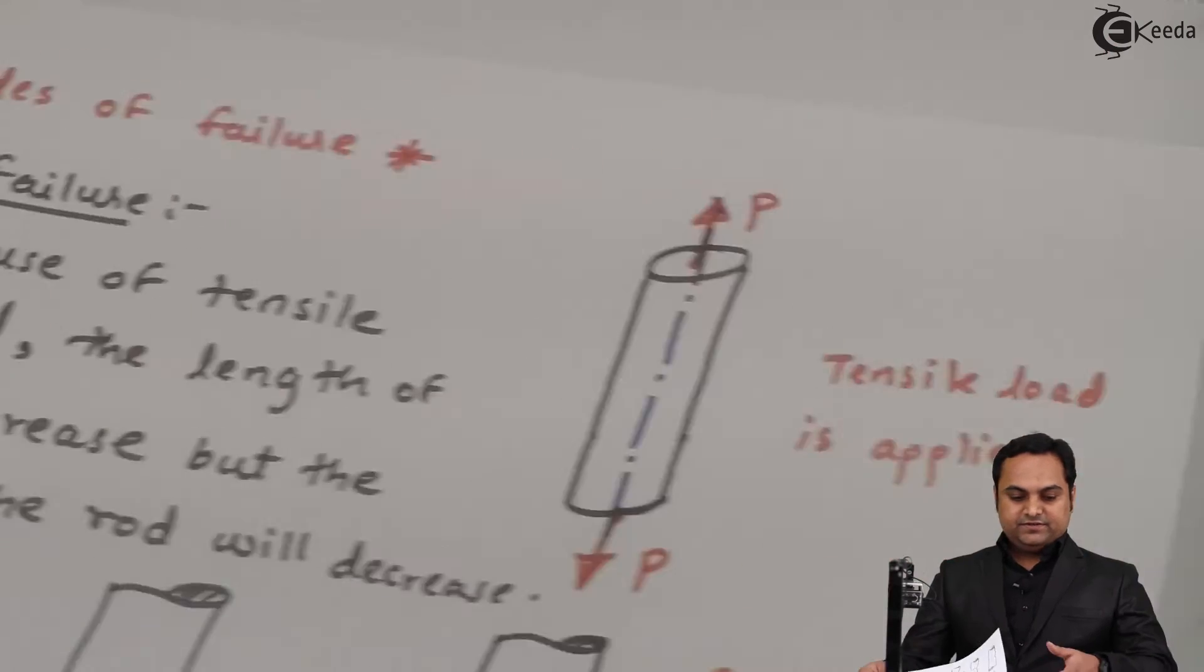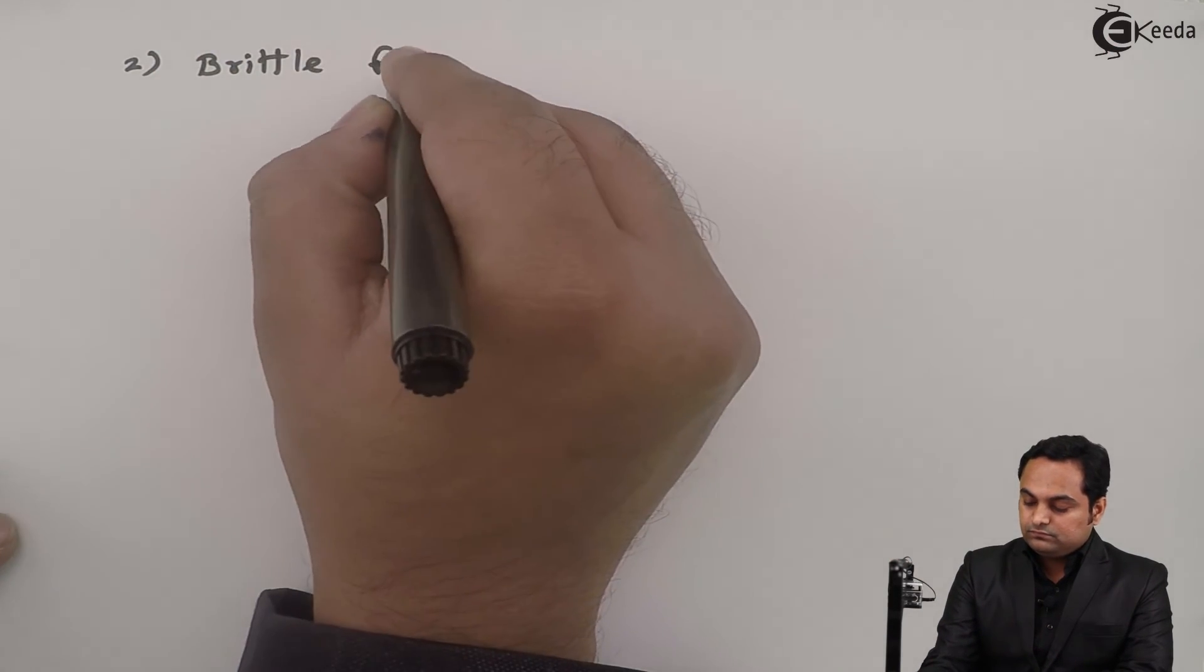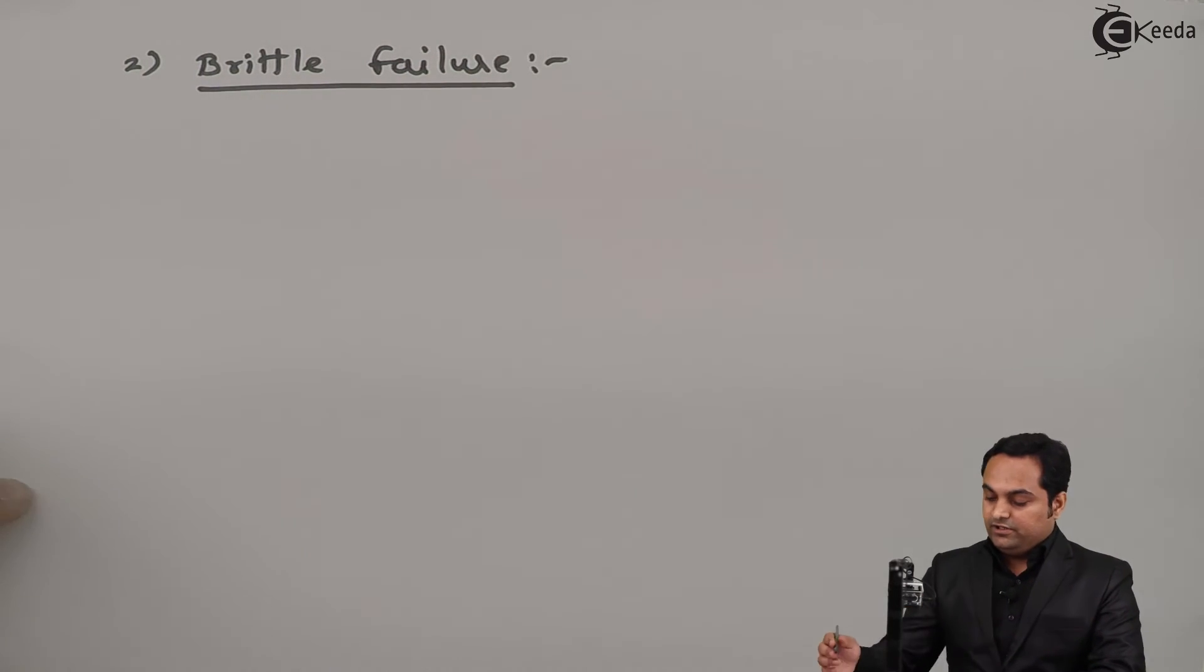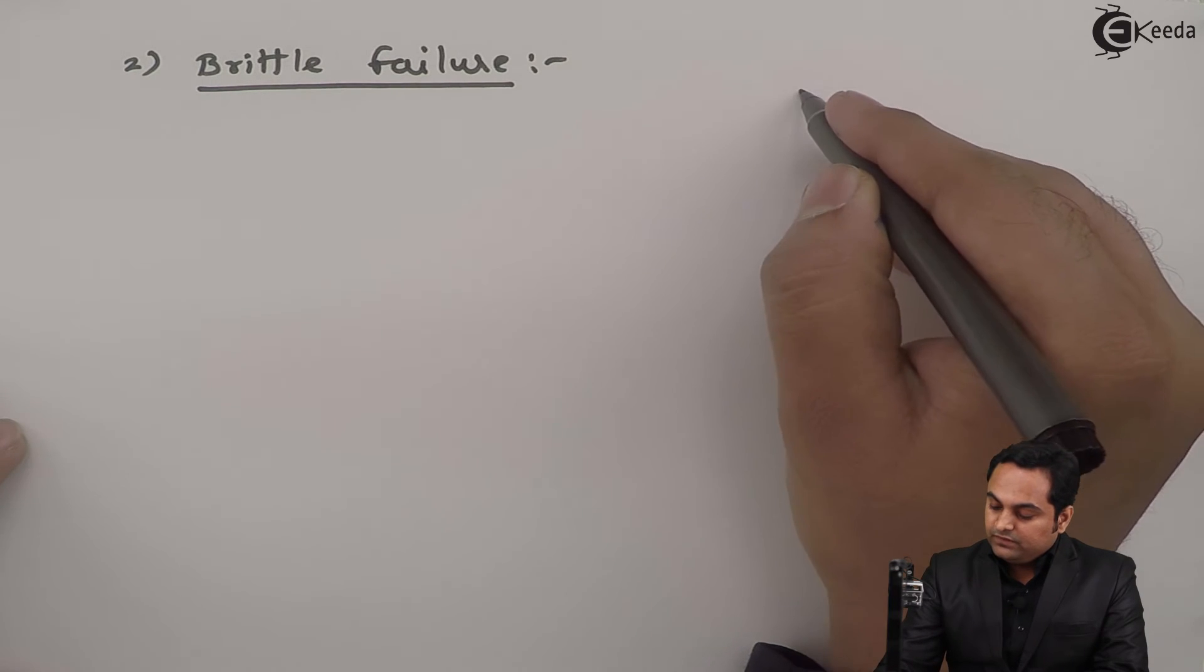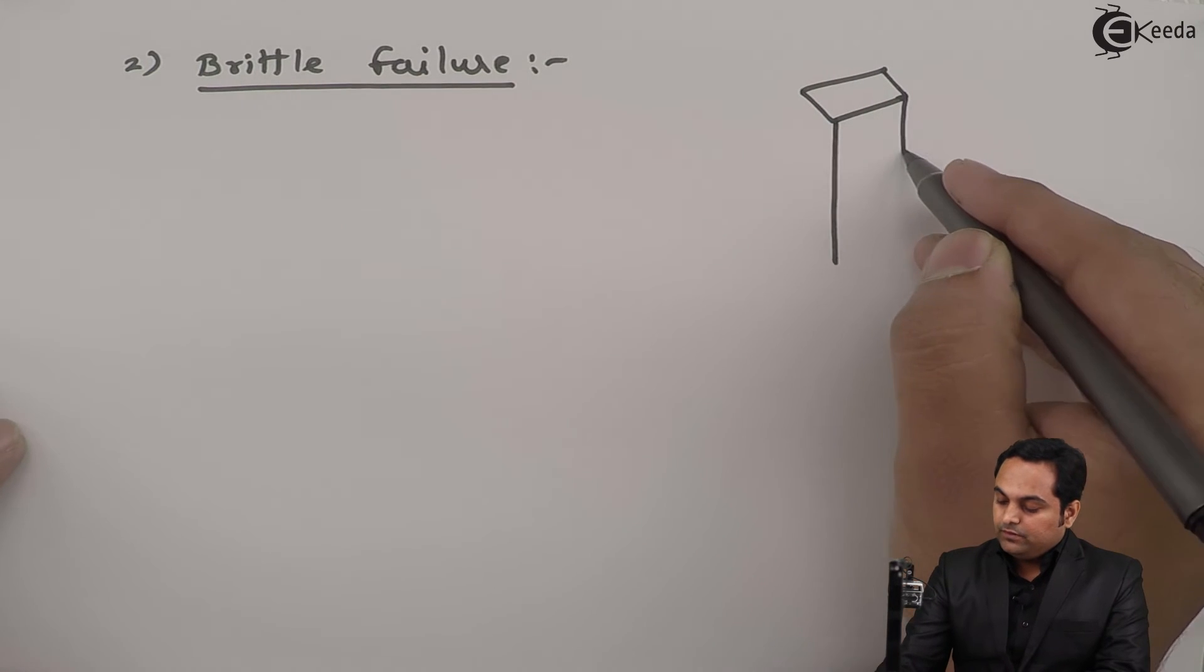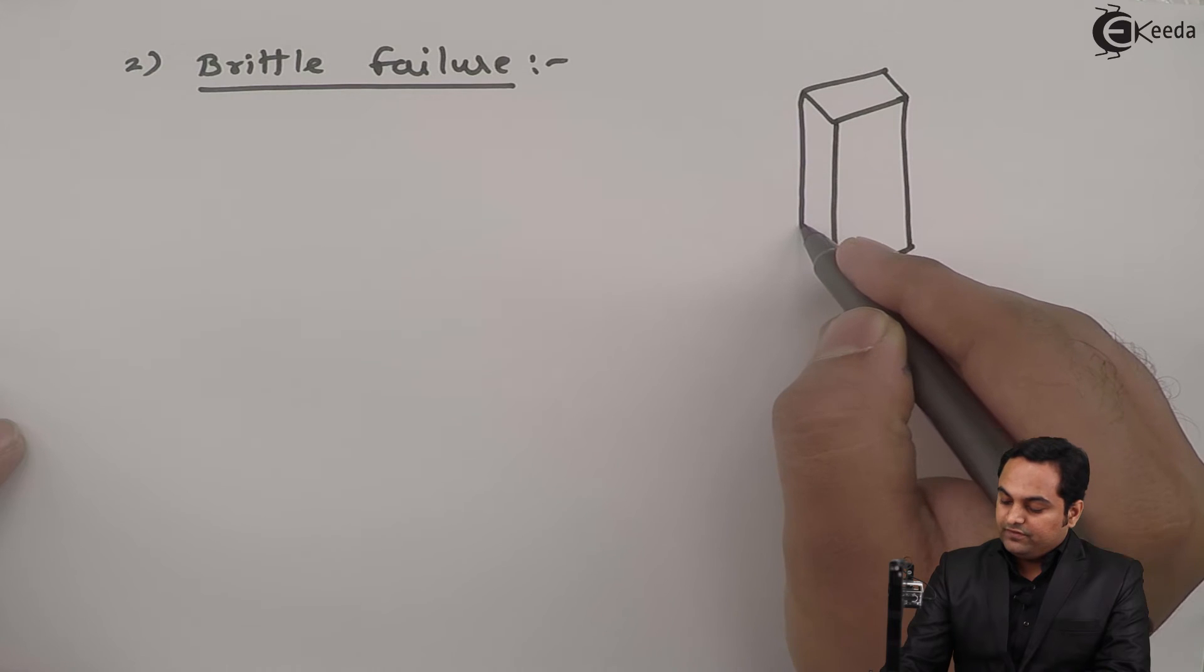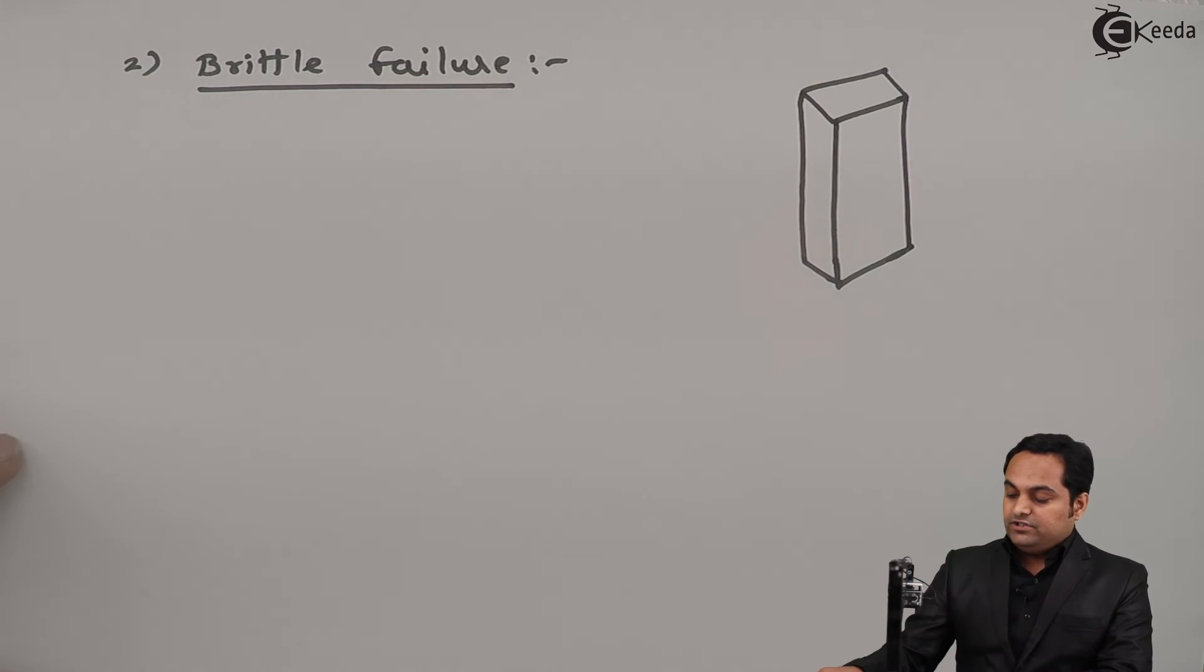Next, brittle failure. In case of brittle failure, I'll assume that there is a block made up of some brittle material like, for example, wood or concrete.